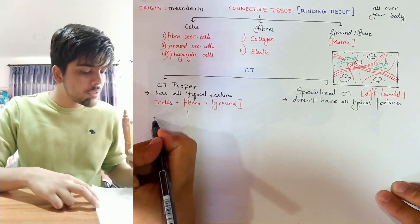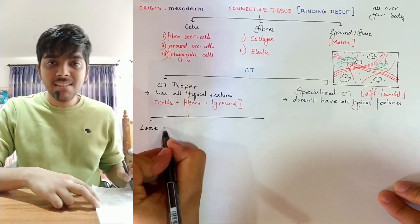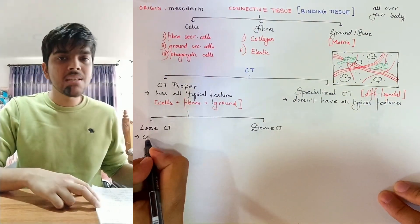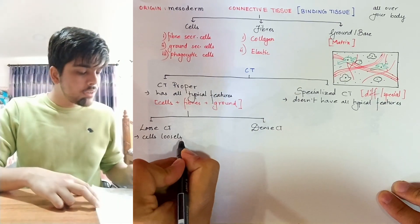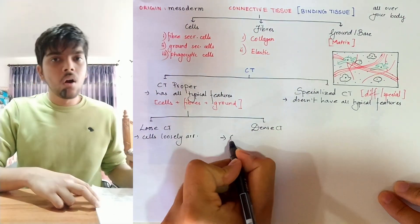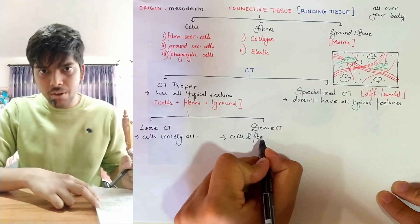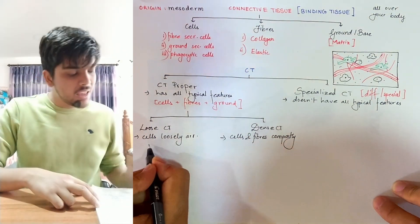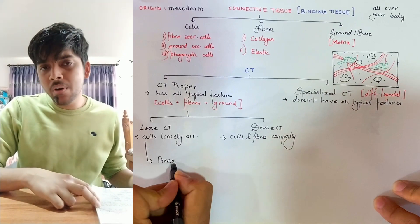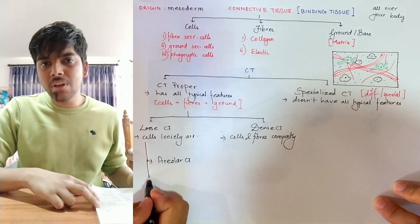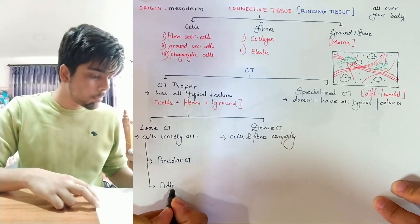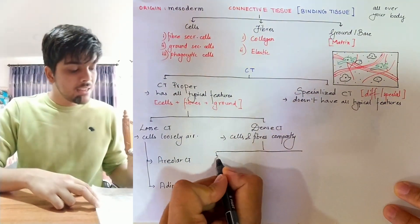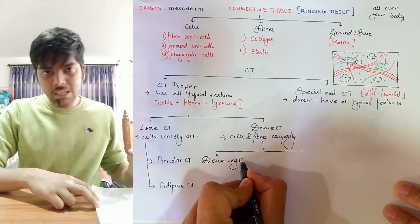Connective tissue proper is of two types: loose connective tissue and dense connective tissue. In loose connective tissue, the cells and fibers are loosely arranged, while in dense connective tissue, the cells and fibers are compactly arranged. Under loose connective tissue we have areolar connective tissue, found all over the body under the skin, and adipose connective tissue, which is the fat-storing tissue. Under dense connective tissue there are two types: dense regular and dense irregular connective tissue.